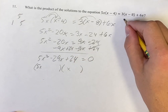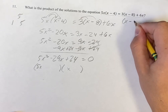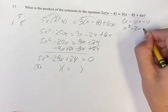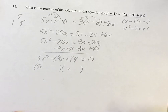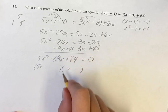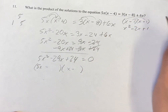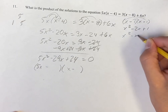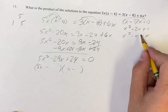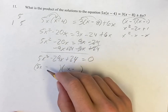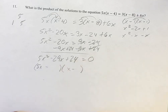Since we have a negative middle term and a positive constant, both binomials will have negative signs. For example, (x − 1)(x − 1) gives x squared minus 2x plus 1 — a negative times a negative makes a positive constant. So 24 has factors: 1 and 24, 2 and 12, 3 and 8, and 4 and 6. We need a pair where, when you multiply one by 5 and add the other, you get 29.